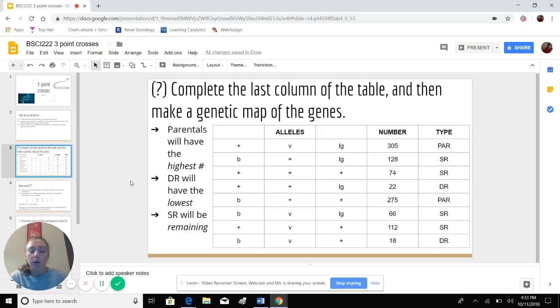The sort of question that will be asked on an exam could be complete the last column of this table, this type column, and then make a genetic map of the genes. So to start off, the way that you determine which combination of genes are the parents, the single recombinants, and the double recombinants is the parentals will always have the highest numbers.